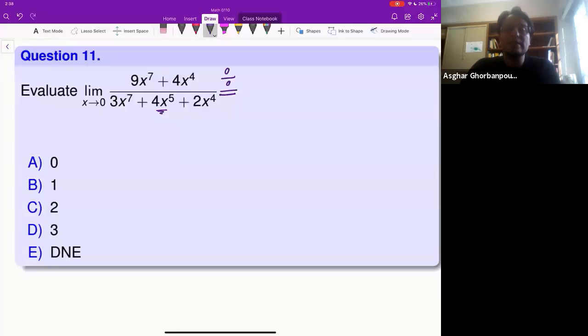0 over 0 is not the final answer. It signals that you need to do something. You have to make sure that you find the vanishing factor. In this case, the vanishing factor is x minus 0, or in other words, it's just x. We have to factor out x.